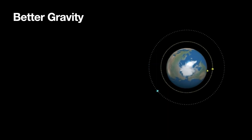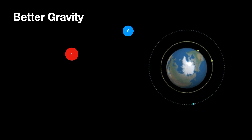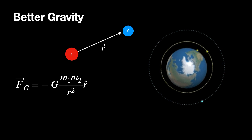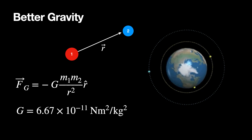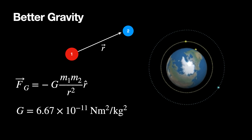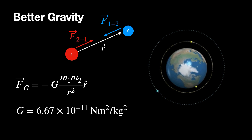Here's a better gravitational force for objects far from Earth's surface. If I have two objects separated by a vector r, I can calculate the gravitational force. It depends on G — the constant 6.67 times ten to the negative 11th — mass 1, mass 2, the distance between them squared, and an r-hat unit vector from 1 to 2. This gives the gravitational force on object 2, which is why the negative sign is there.